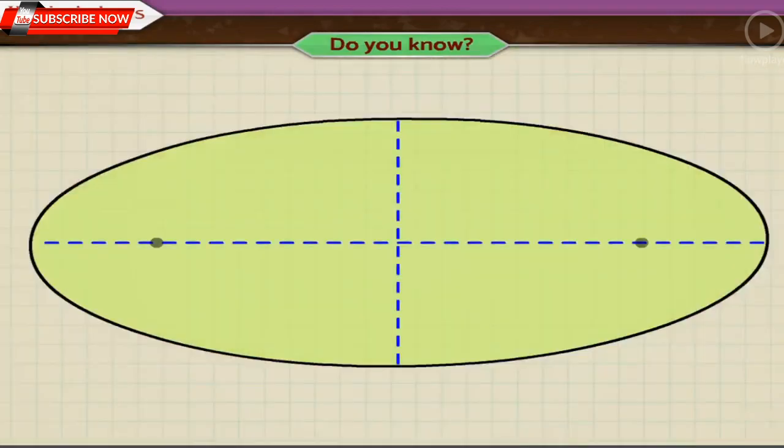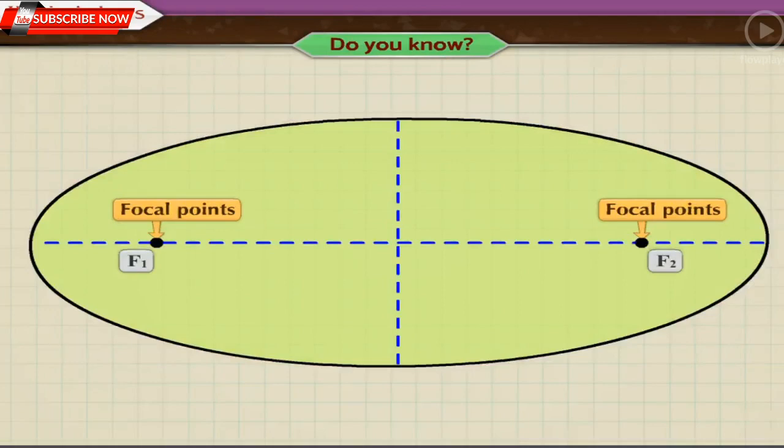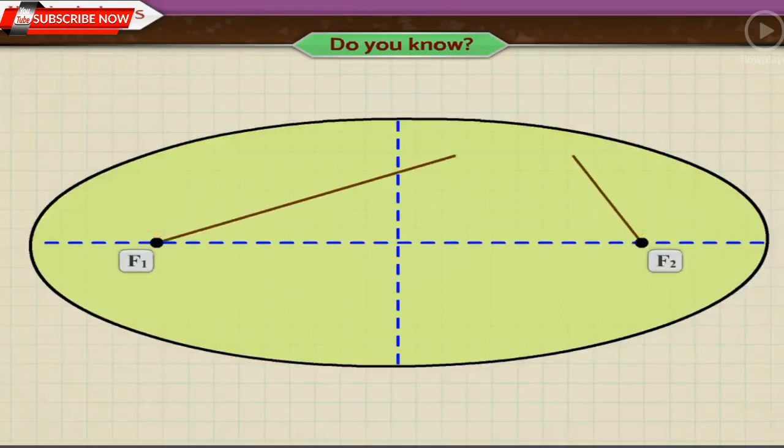An ellipse has two focal points. F1 and F2 are two focal points of the ellipse shown here. The sum of the distances to the two focal points from every point on the curve is constant.